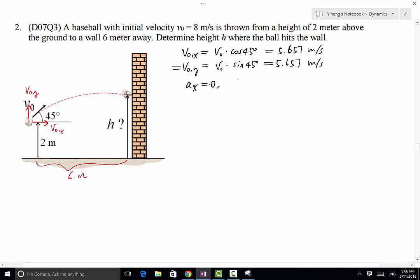And the total distance, which is simply x, equals to V0x times t. So x equals to 6 meters. V0x we just determined it. So from here we can determine t.